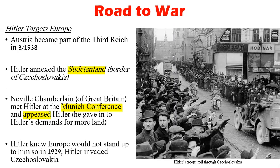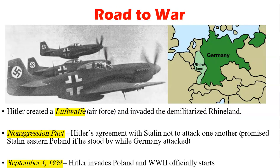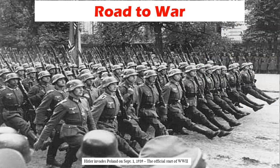Hitler targeted Europe: Austria became part of the Third Reich in 1938, and he took the Sudetenland at the border of Czechoslovakia. Neville Chamberlain, prime minister of Great Britain, met Hitler at the Munich Conference and essentially appeased him, giving in to his demands for more land — so Hitler knew Europe would not stand up to him. In 1939, he invaded Czechoslovakia. He created the Air Force — the Luftwaffe — and invaded the demilitarized Rhineland. He made a non-aggression pact with Stalin, promising Stalin eastern Poland if he stood by while Germany attacked. Then on September 1st, 1939, he invaded Poland and World War II officially started — breaking his word to Stalin.